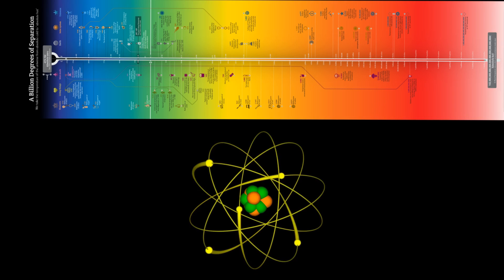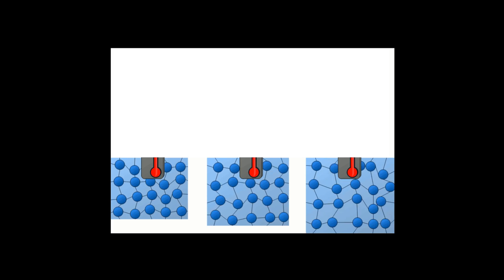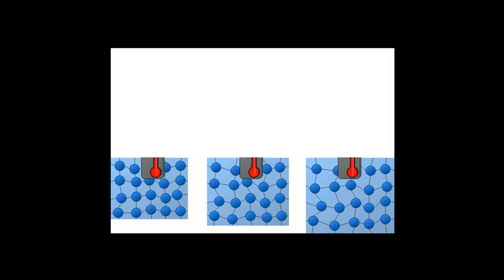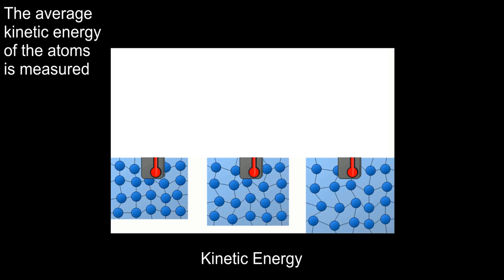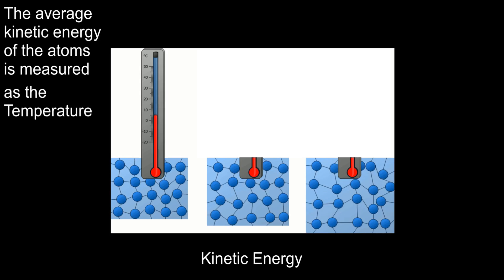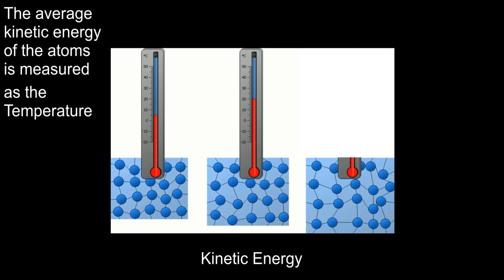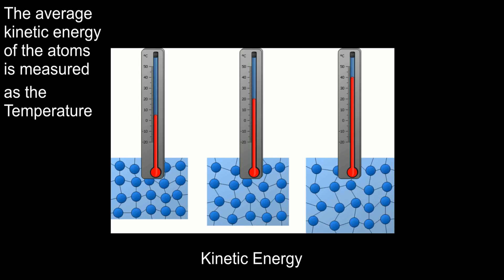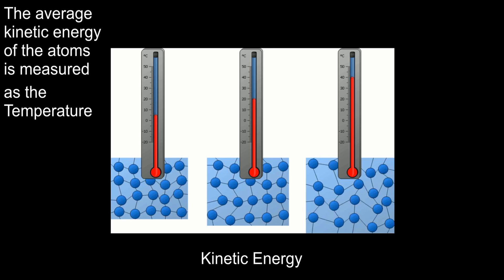All matter that we know is made of atoms, and atoms are moving and vibrating all the time, so they have kinetic energy. The average of the kinetic energy of the atoms is measured as the temperature. So the more atoms vibrate, the higher the temperature will be, and vice versa. Less atom vibration means lower temperature.